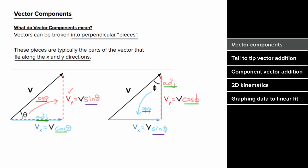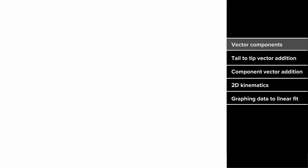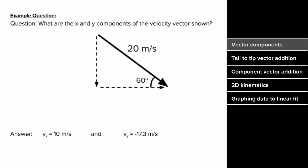What would an example problem involving vector components look like? Say you wanted to determine the x and y components of a velocity vector. Since the horizontal component is adjacent to the angle given, we write the horizontal component as the magnitude of the total vector, 20 meters per second, times cosine of the angle, which gives us 10 meters per second.